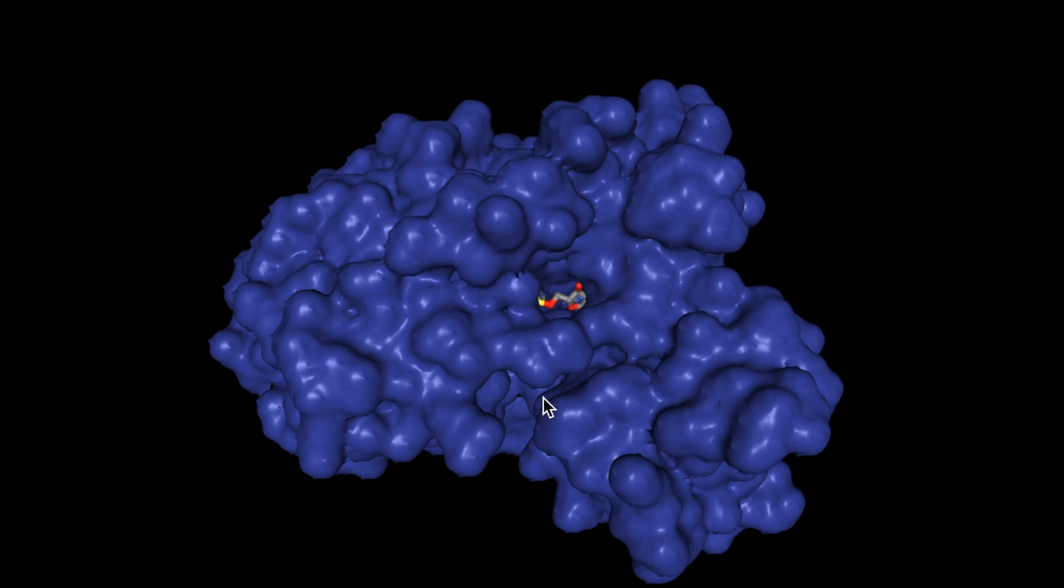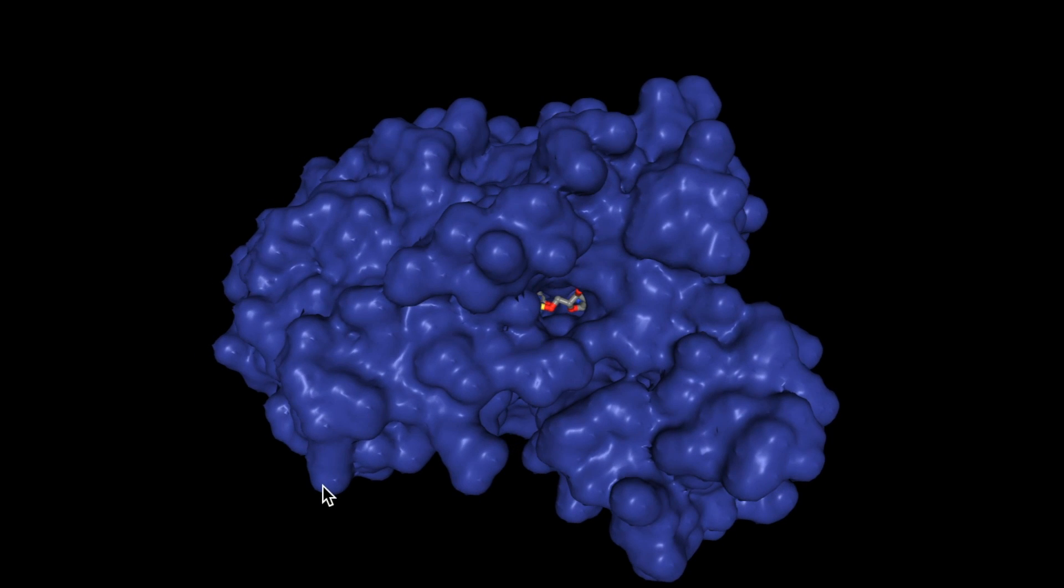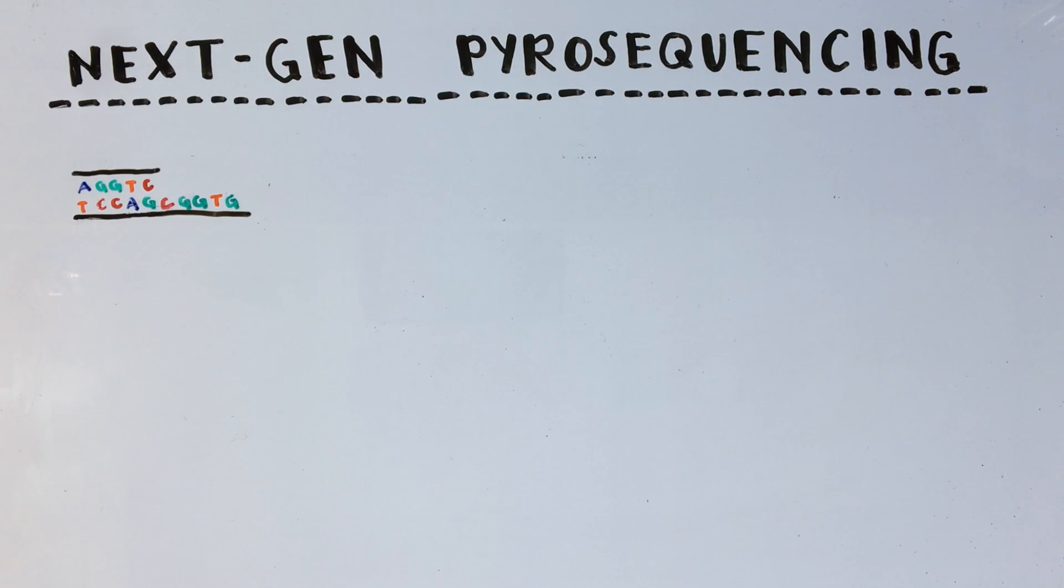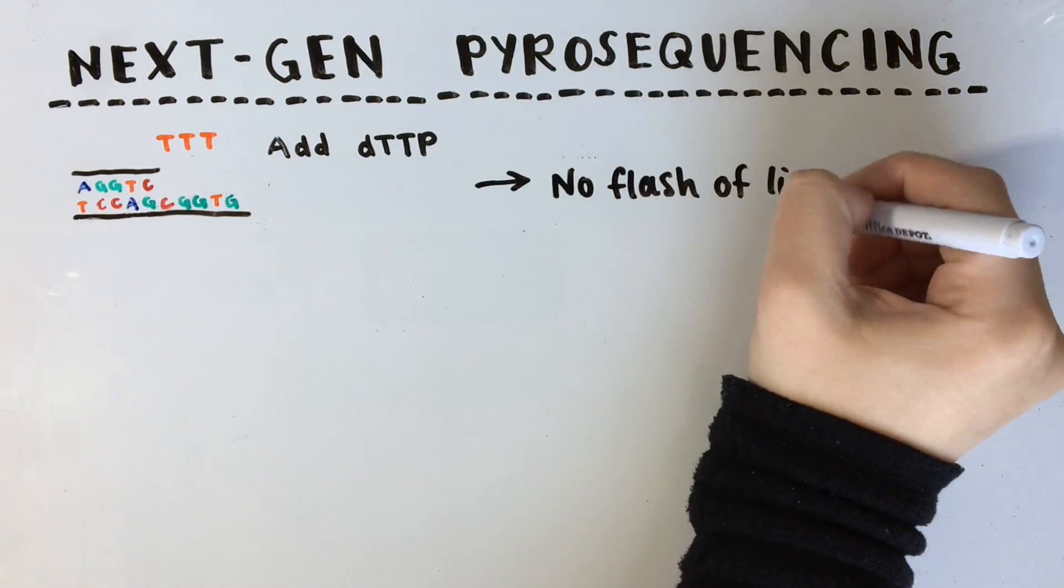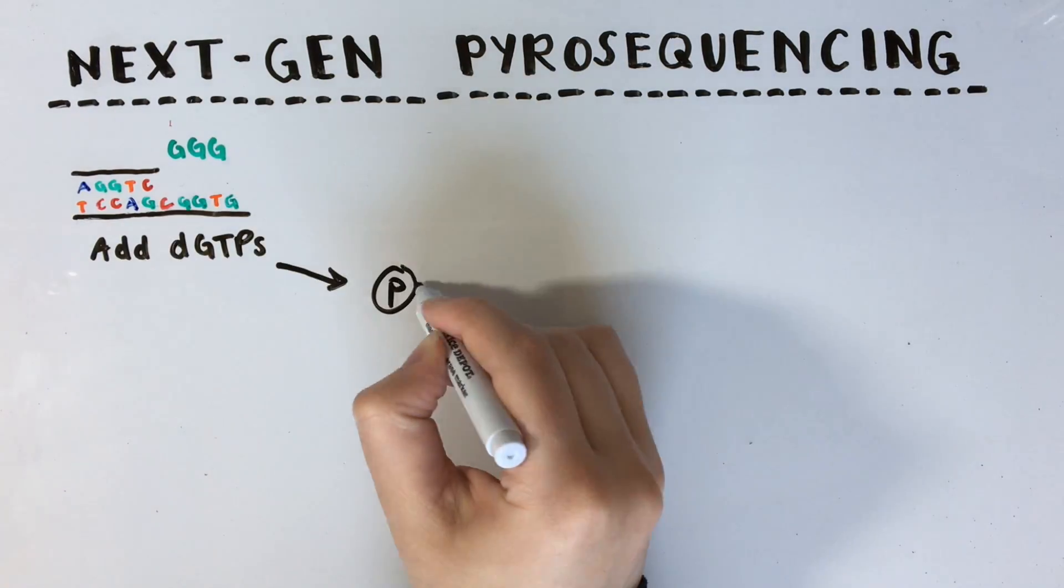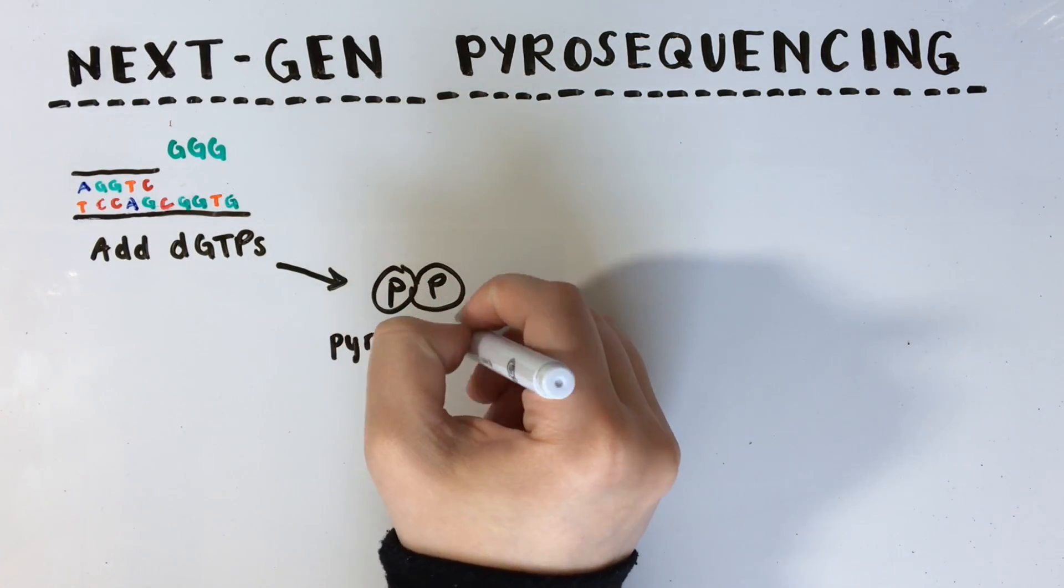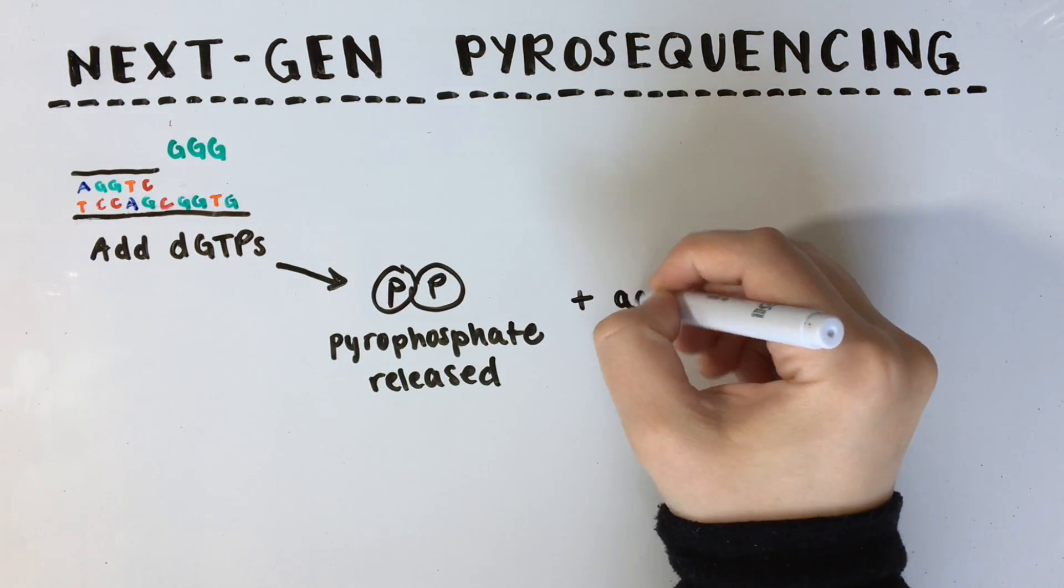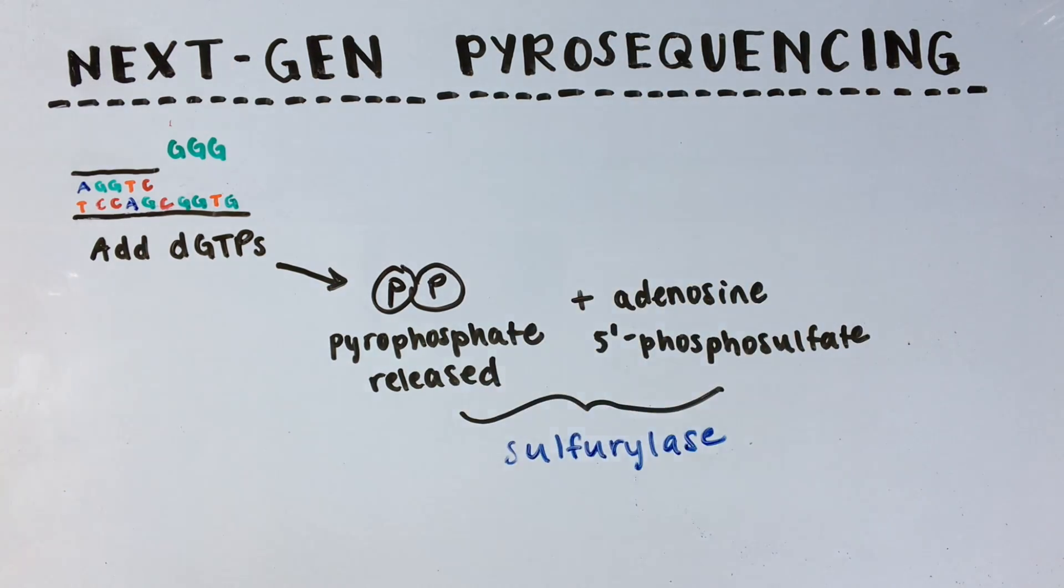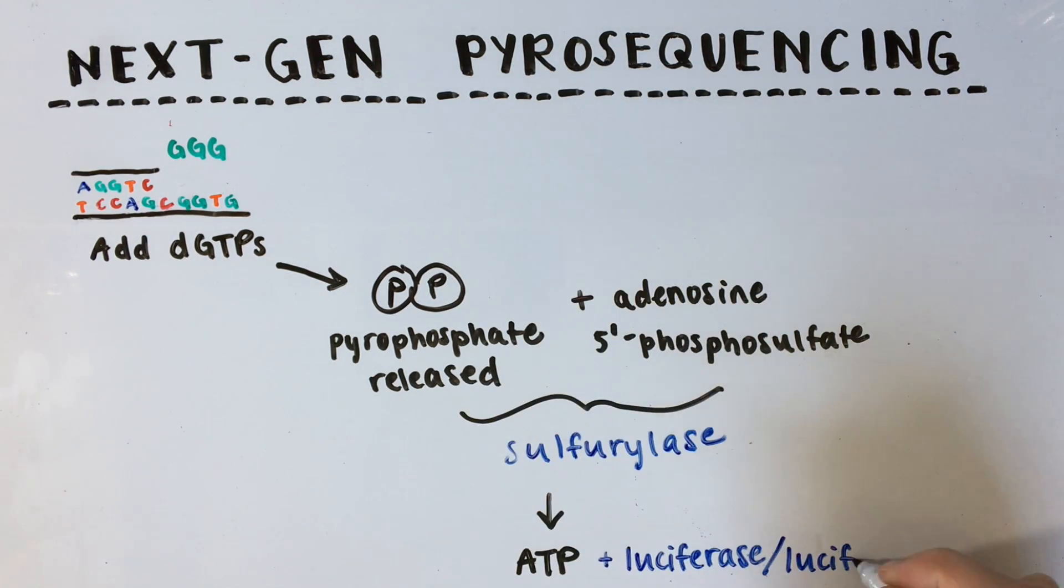People have incorporated luciferase into biotechnology and laboratory procedures. Next-gen pyrosequencing of DNA uses luciferase to produce flashes of light that correspond to the addition of nucleotides. dNTPs are added one at a time, and when the correct nucleotide is added to the template strand, pyrophosphate is released. This pyrophosphate is converted to ATP using the enzyme sulfurylase. The luciferase and luciferin in the medium can react with the ATP and a little flash of light is produced. By recording millions of flashes of light, a computer can sequence an entire genome.